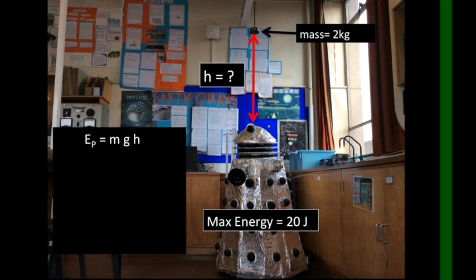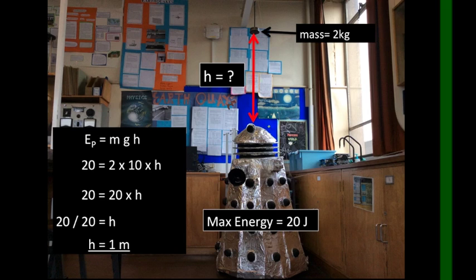To work this out, start off with the equation for potential energy. Ep is equal to mgh. Then, put in the values you know, so the energy was 20, the mass was 2, and the value we'll use for g is 10. After that, simplify the numbers a little, so 2 times 10 is 20, then rearrange by dividing both sides by 20, and finally, 20 over 20 is 1. Flip it around, remember the units, and we've calculated the height has to be 1 meter above the Dalek.